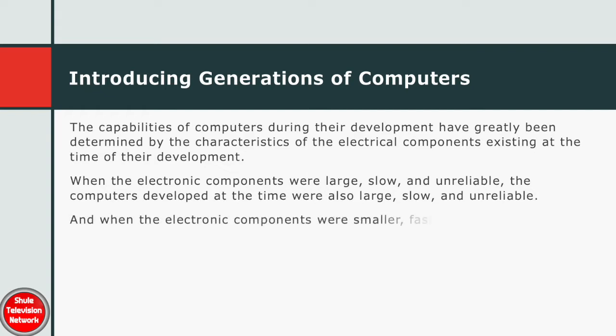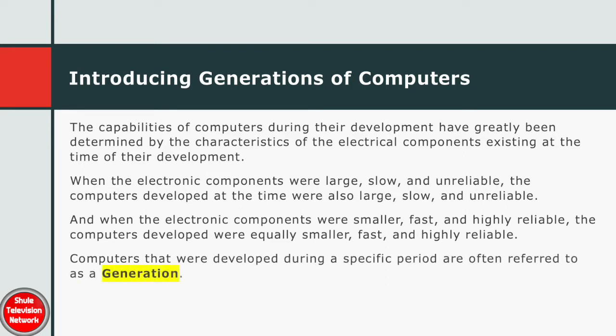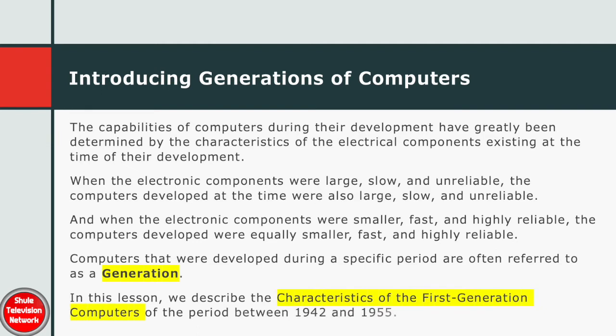When the electronic components were smaller, fast and highly reliable, the computers developed were equally smaller, fast and highly reliable. Computers that were developed during a specific period are often referred to as a generation. In this lesson we describe the characteristics of the first generation computers of the period between 1942 and 1955.